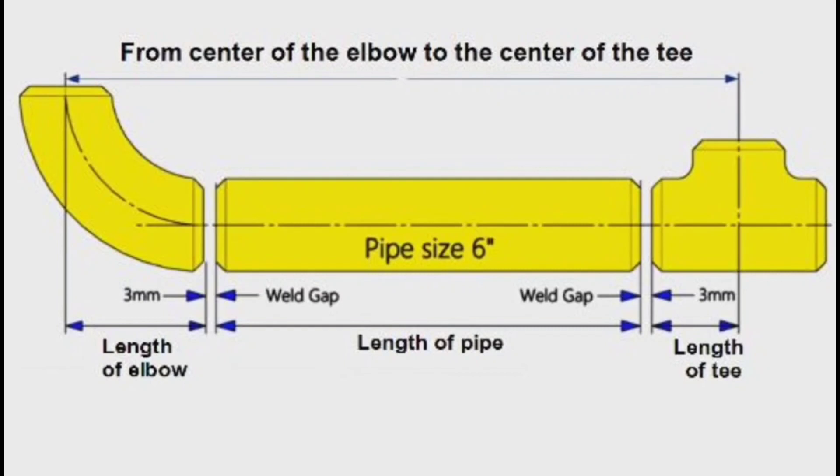In this drawing, we will learn how to calculate the length of pipe piece in this pipeline section. This is a 6-inch pipe section. This pipe section consists of a 90-degree elbow, pipe piece, and equal tee.